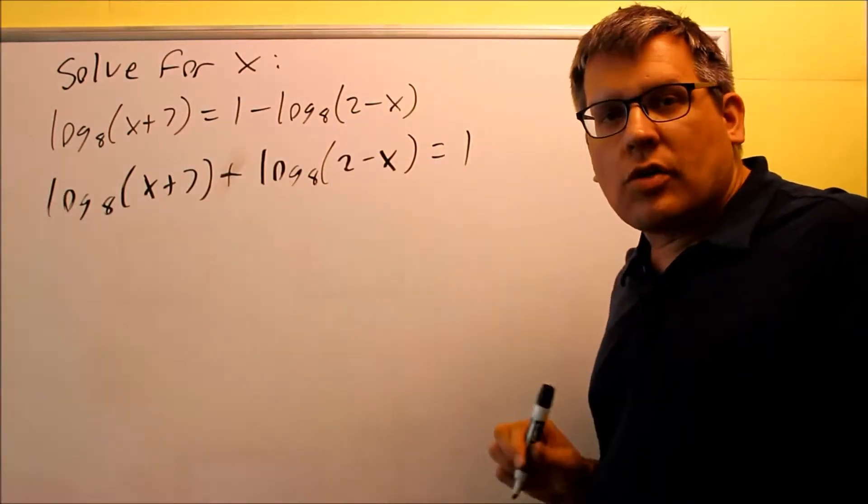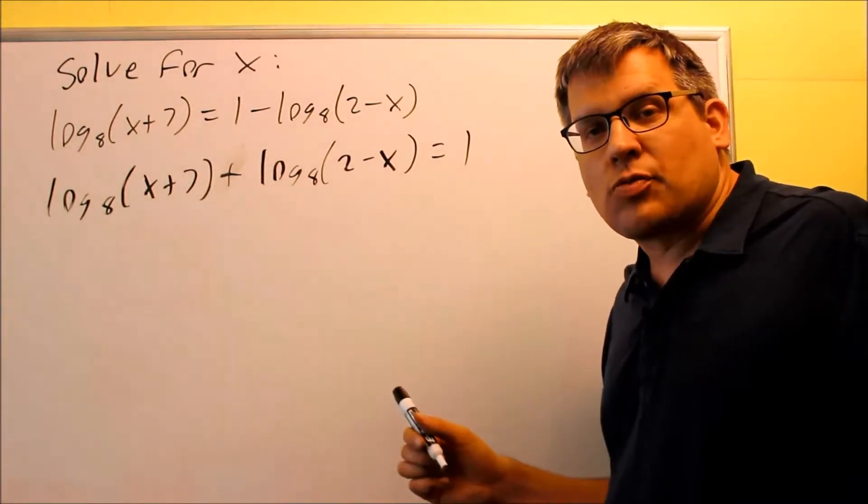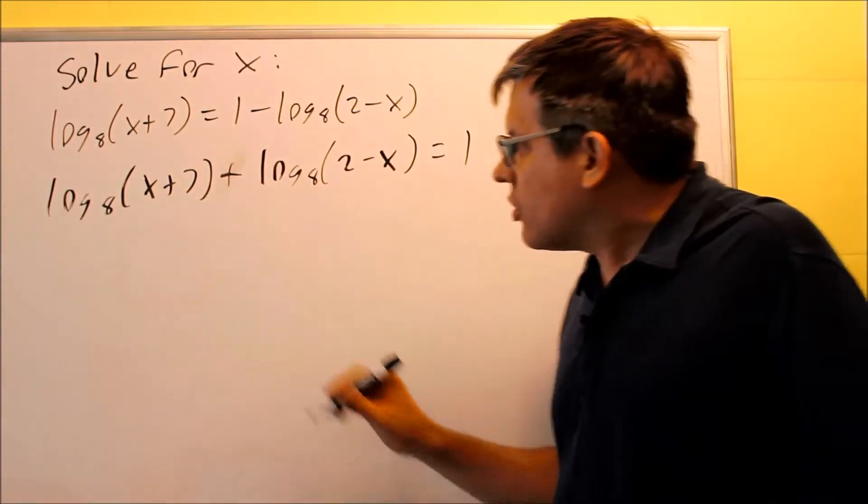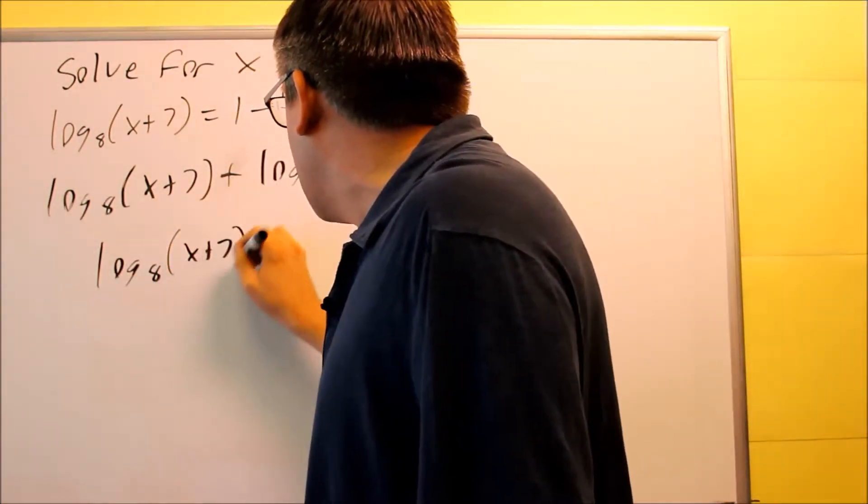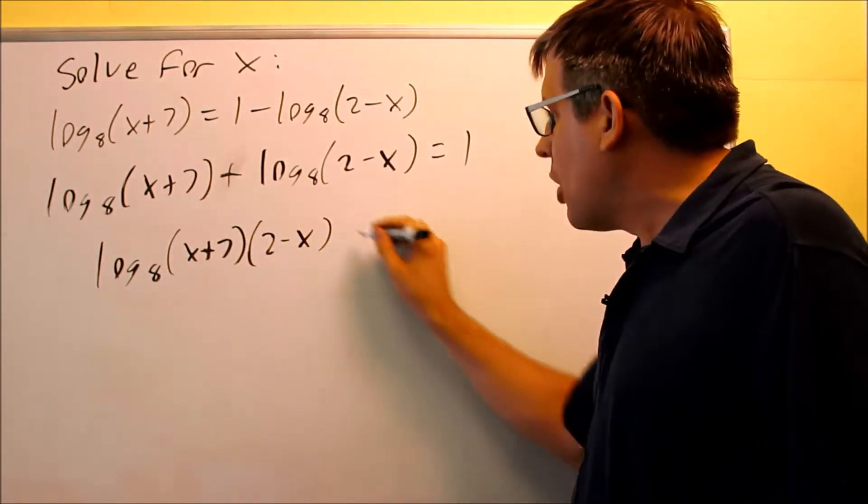We have two different logs, and the idea here is you want to get both the logs to be a single log, and then we'll change it into exponential form. That way we can solve it. The plus sign means that we're going to change that into multiplication. This is log base 8 of x plus 7 times 2 minus x. So we change it into multiplication.